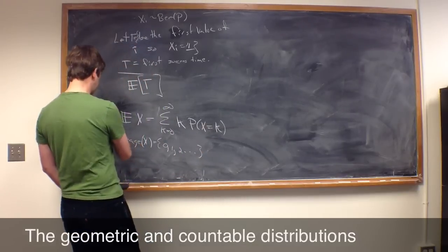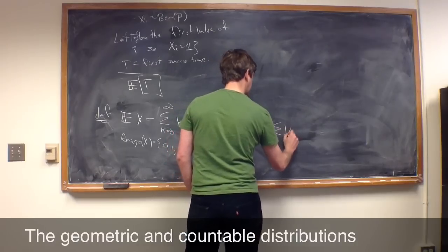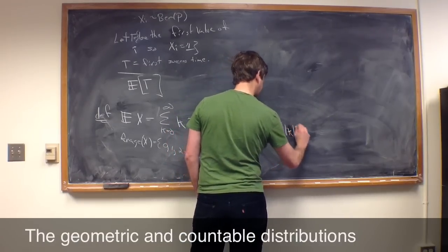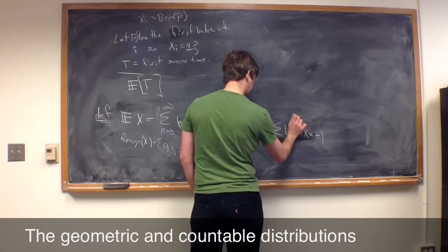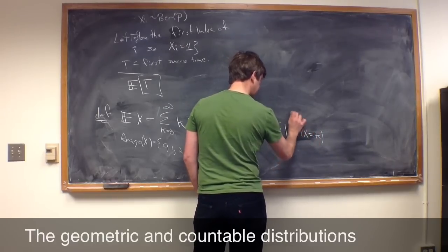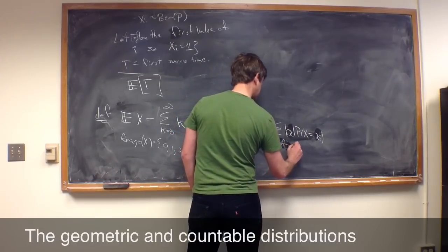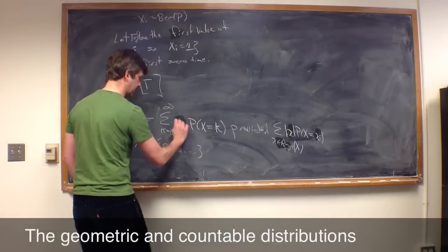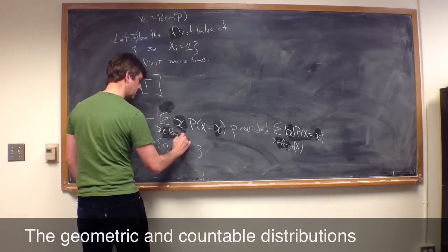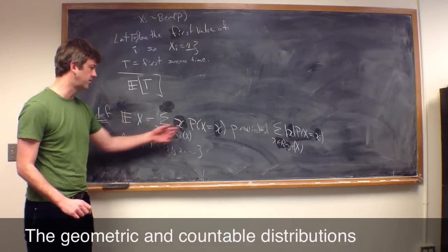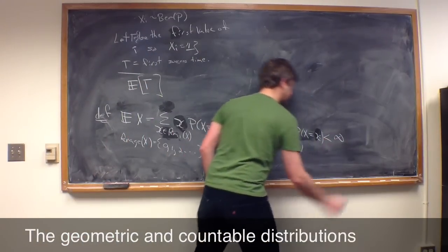And we'll define this, provided the sum of absolute value of K times the probability that X equals K over all K in the range of X is finite. I actually want to allow this to take many different values. So, in the case I wrote up at first that it was countable, 0, 1, 2, 3, just the natural numbers, there's no problem with this.